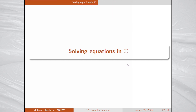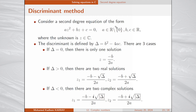I will now show how to solve equations in the set of complex numbers. Consider a second-degree equation az² + bz + c = 0, where z is a complex unknown and a is a non-zero real number, b and c are real. Define the discriminant Δ = b² - 4ac. If Δ equals 0, there is only one solution: z = -b divided by 2a.